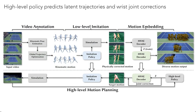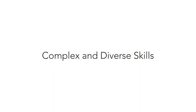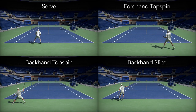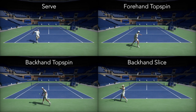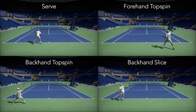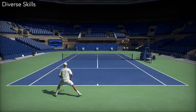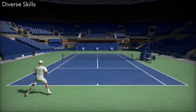To address the inaccuracies in the wrist joint for precise control of the racket, we propose a hybrid control structure where the full-body motion is controlled by the reference trajectories from the motion embedding, while the wrist motion is directly controlled by the high-level policy. With our system, various tennis skills can be learned such as serve, forehand topspin, backhand topspin, and backhand slice. These skills are learned using data from a right-handed player who used a one-hand backhand.